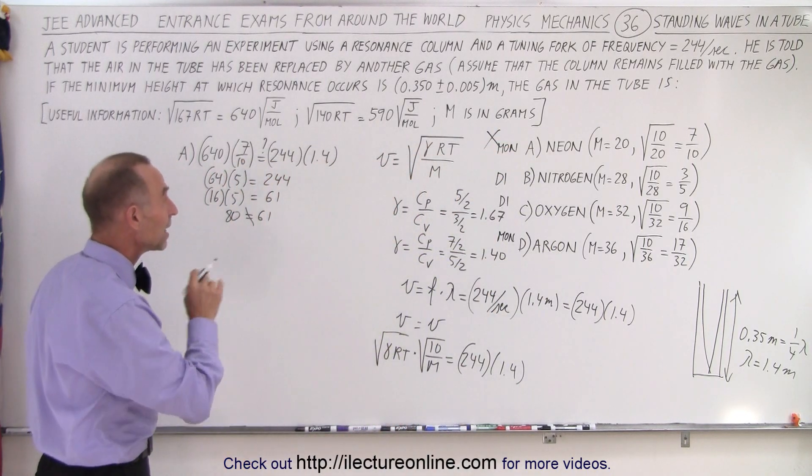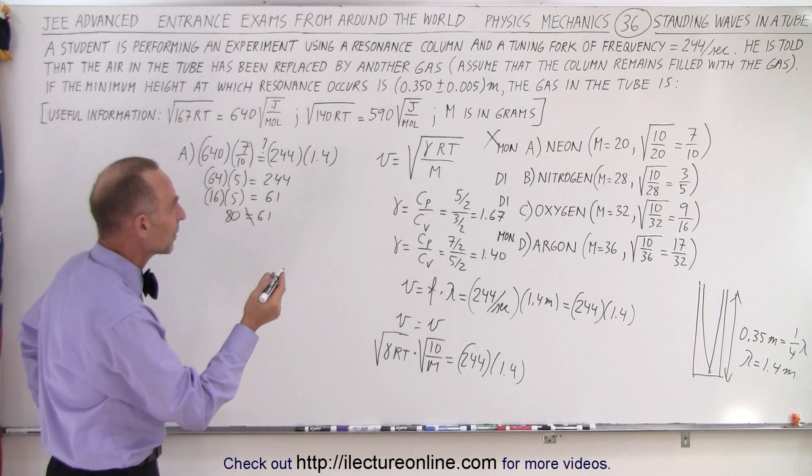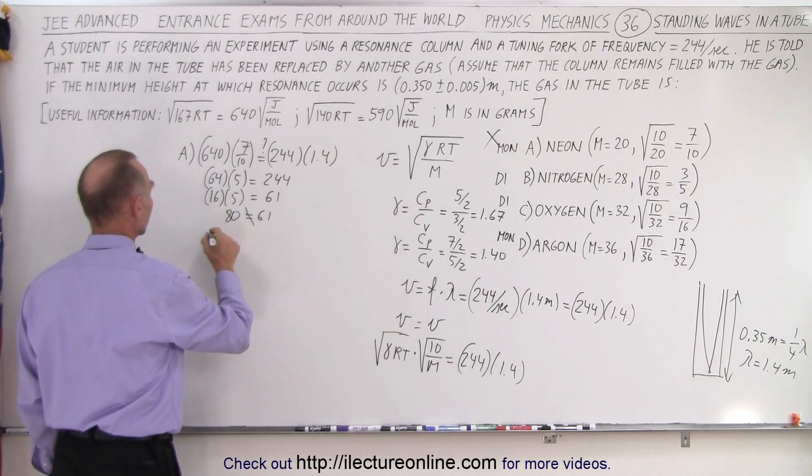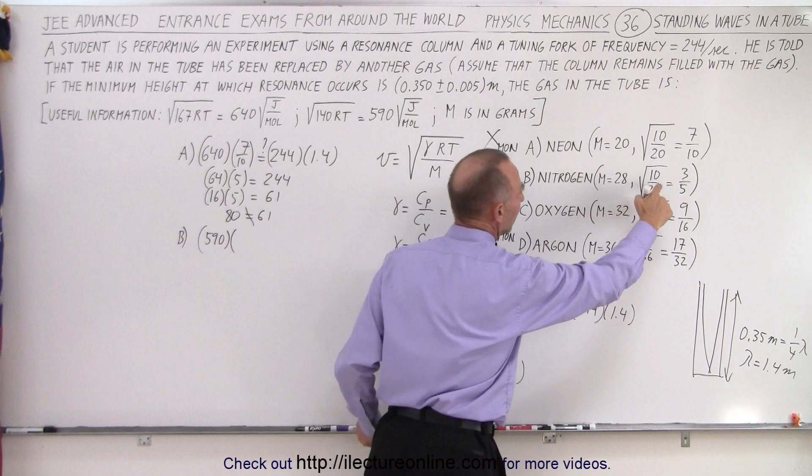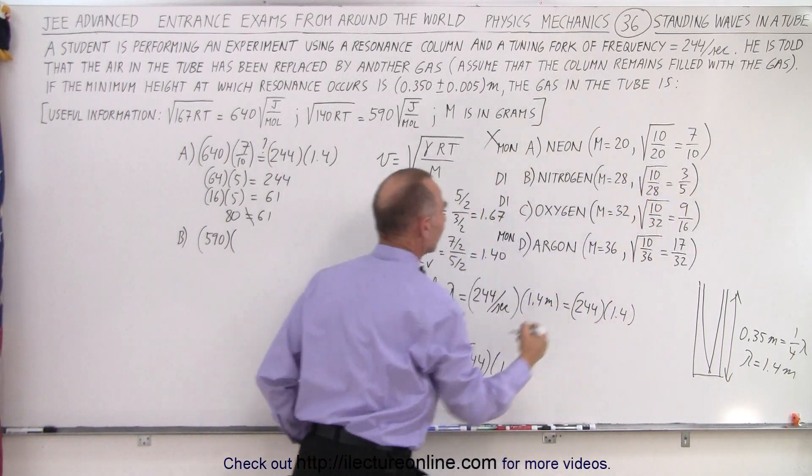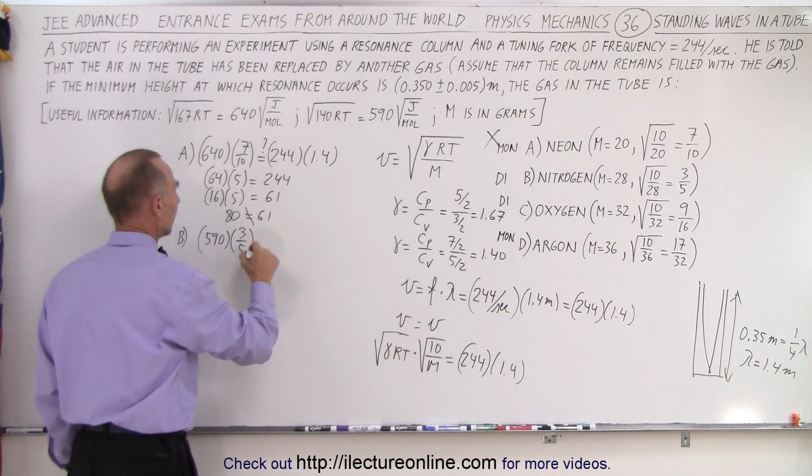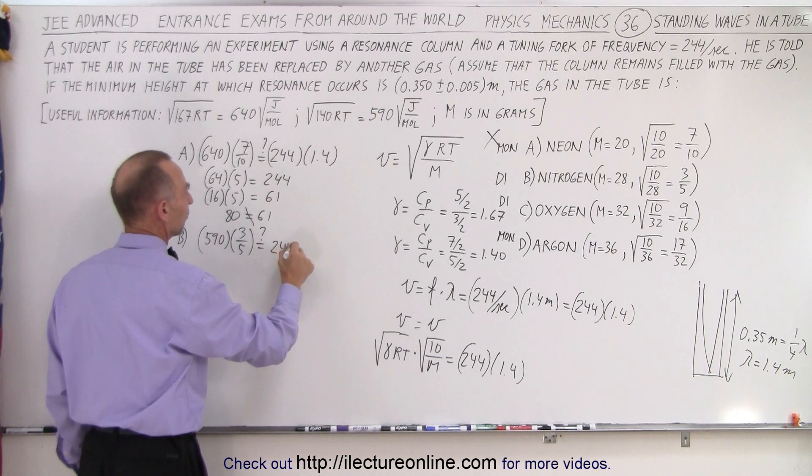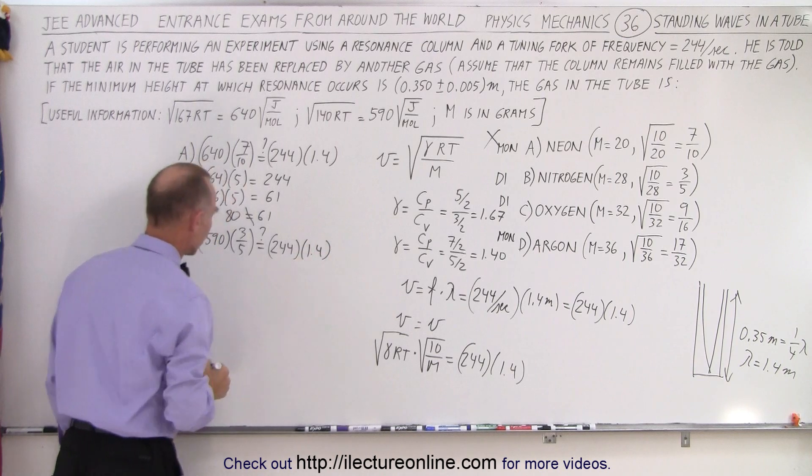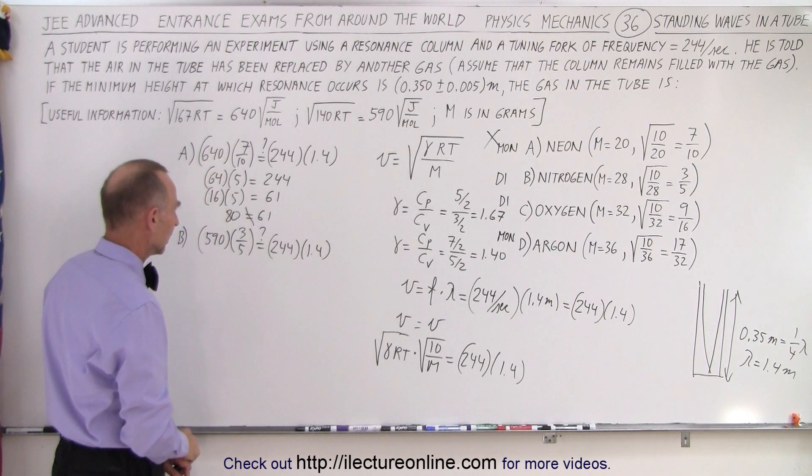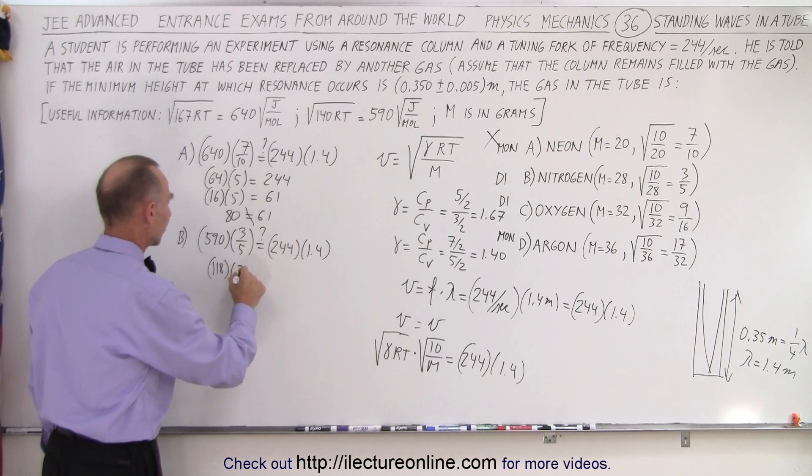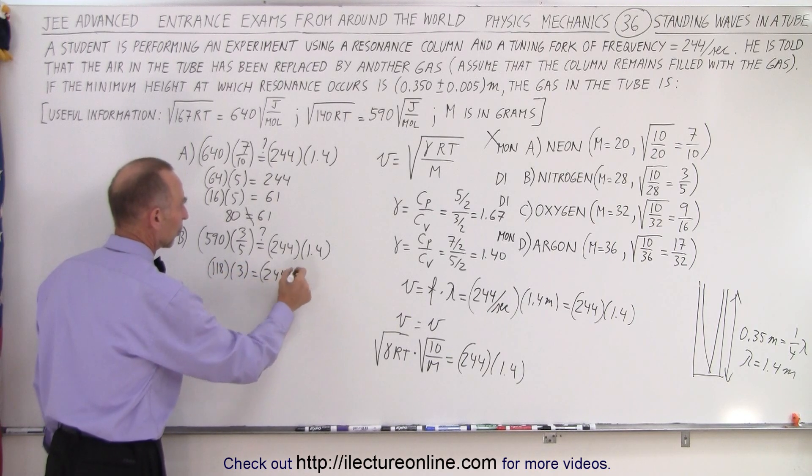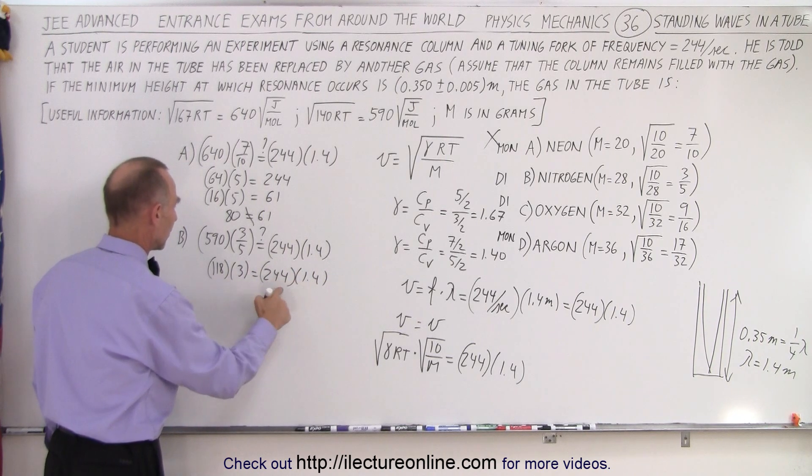Now we need to do the same with B, with nitrogen. Nitrogen is a diatomic gas. So in this case we're going to take 590 multiplied times for nitrogen, the square root of 10 over 28 is 3 over 5. And is that equal to 244 times 1.4?